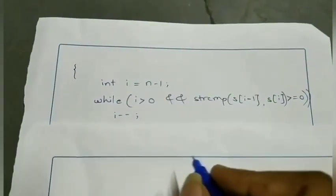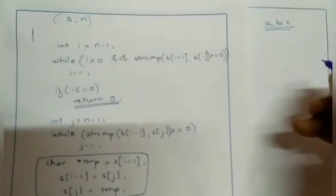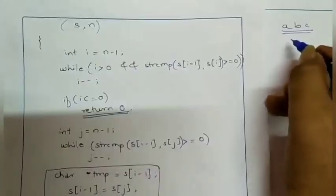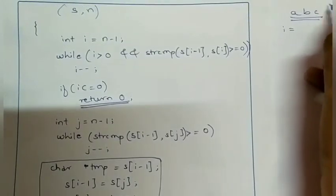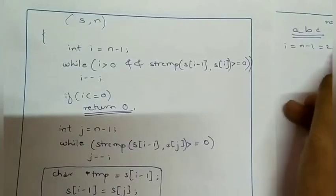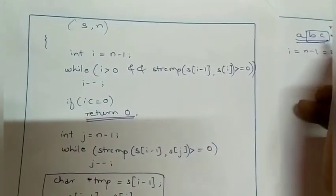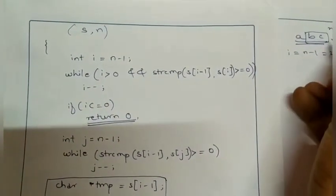Now I have written the code and we are doing a dry run. First time it will print a b c because of the do-while loop. Now it passes to the next permutation function. Inside the function, variable i is initialized; n equals 3, so n minus 1 equals 2. We need to change a b c to a c b, traversing from the back.